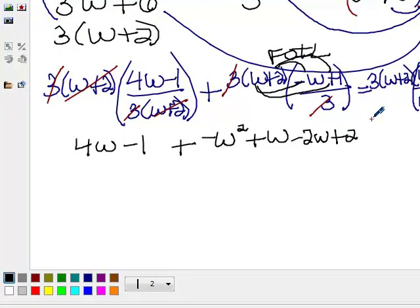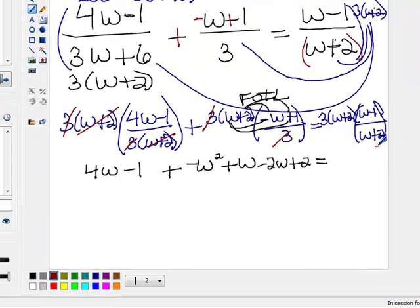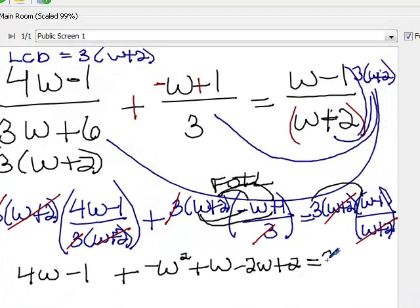So that takes care of that fraction. And then in the last section, these w plus 2's cancel, and we just need to distribute our 3 to the w minus 1. So 3 times w is 3w, and 3 times negative 1 is negative 3.